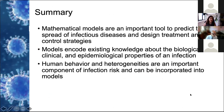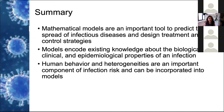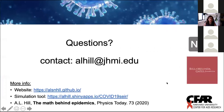To wrap up: mathematical models are a really important tool to help us predict the spread of infections and design better control strategies. They have to encode what we know about the biology, the clinical side, and the epidemiological side of an infection, but human behavior and the heterogeneities in that behavior are a really important component of infection risk and can also be incorporated into models. Feel free to reach out or check out some other resources we have here.